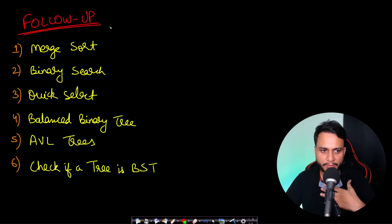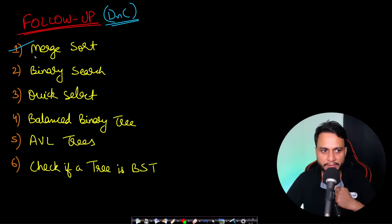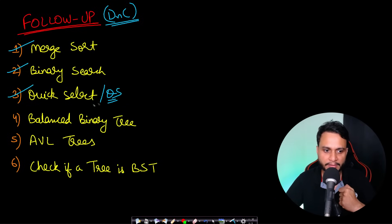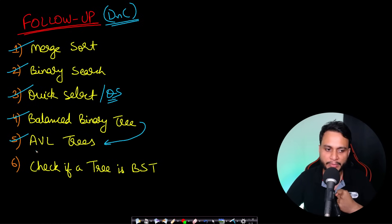Now let's look at follow-up problems. Since this algorithm is based on divide and conquer, interviewers may ask related questions. The code is very similar to merge sort, so you should know merge sort's implementation well. It is also similar to binary search, quick select, and quicksort due to the binary partition using low, high, and mid. You may also be asked about balanced binary trees, and an important implementation is the AVL tree — especially for harder interviews.